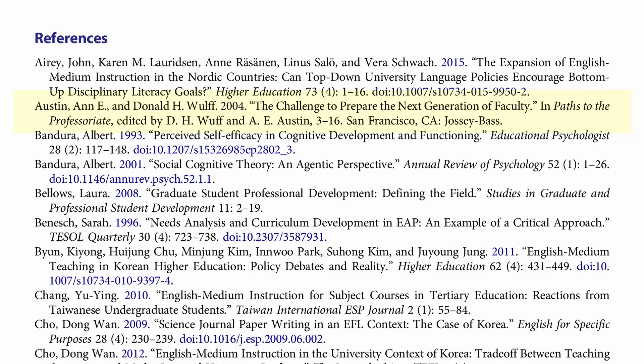Next we have an article from a book — a research article that appears as part of a collection of research articles in an edited book. You've got the title of the article in quotes, and then it appears in a book called 'Paths to the Professoriate,' edited by so and so. It's a book that's a collection of new research articles by different authors, put together by editors. The page number is 3 to 16. Then for books, you've got the location of the publisher — San Francisco, California — colon, Jossey-Bass, which is the name of the publisher.